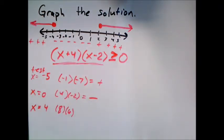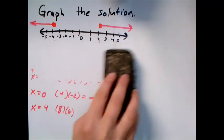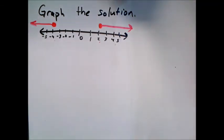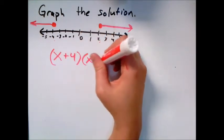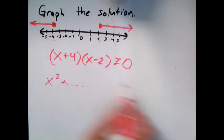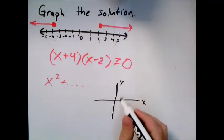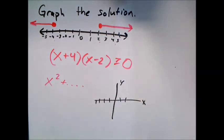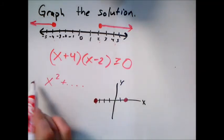The test points always work, but here's something quicker: think about graphing the quadratic equation. A quadratic graphs as a parabola. How do I know it's quadratic? Because if I start foiling, the first term I get is x squared. I know where it equals zero, so my x-intercepts are at two and negative four.